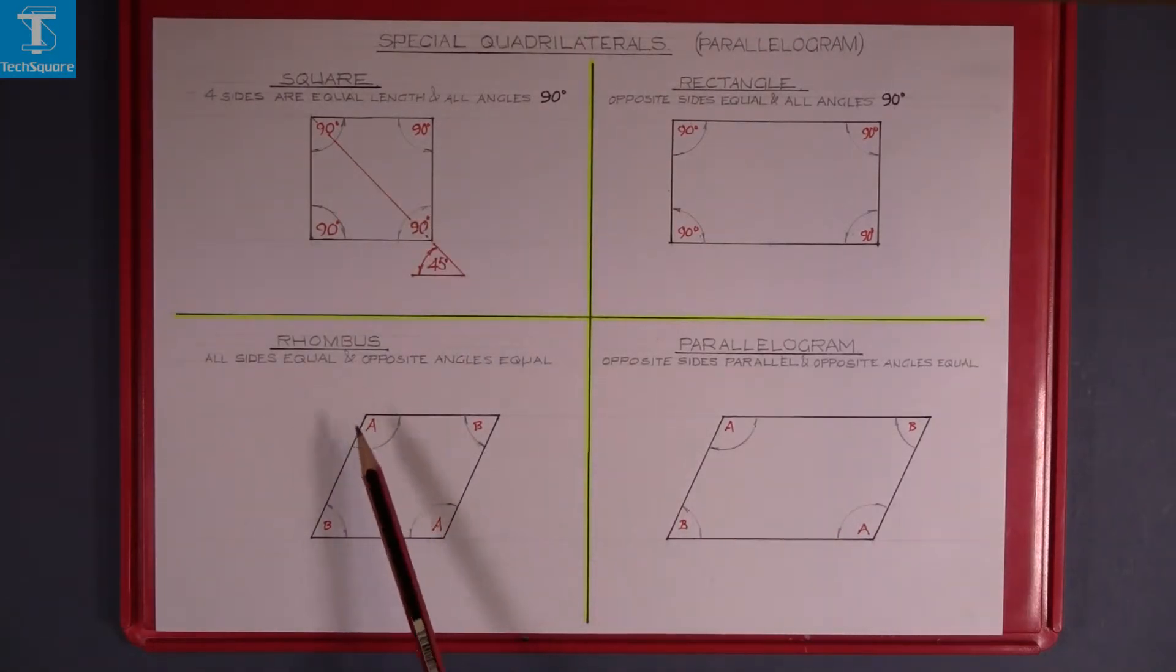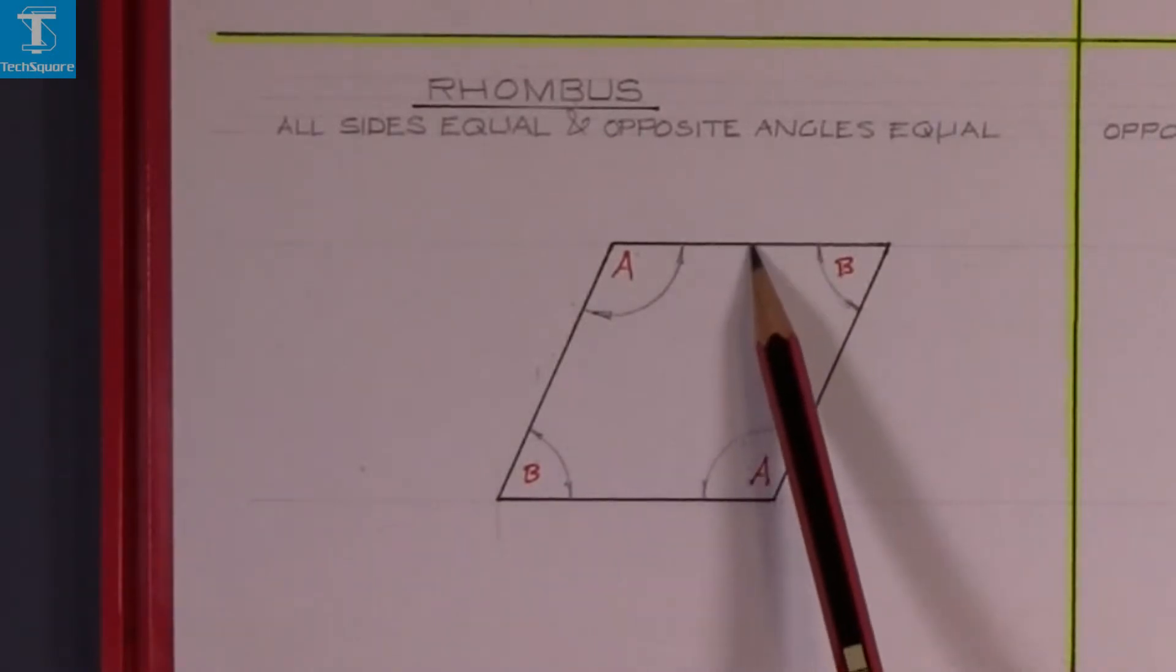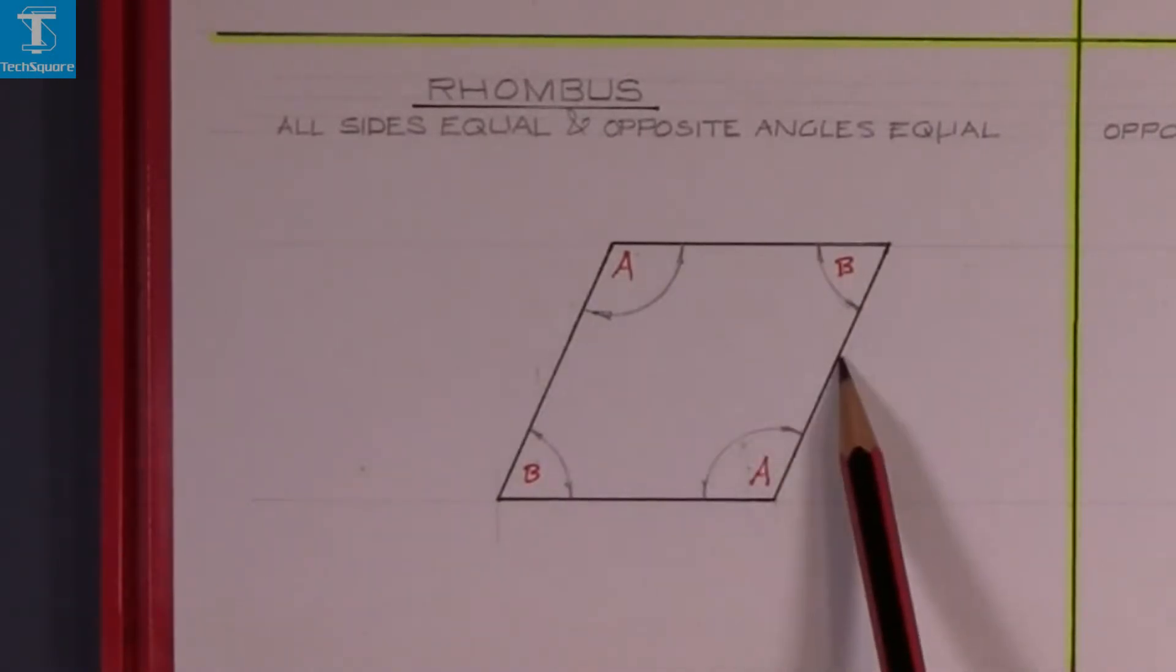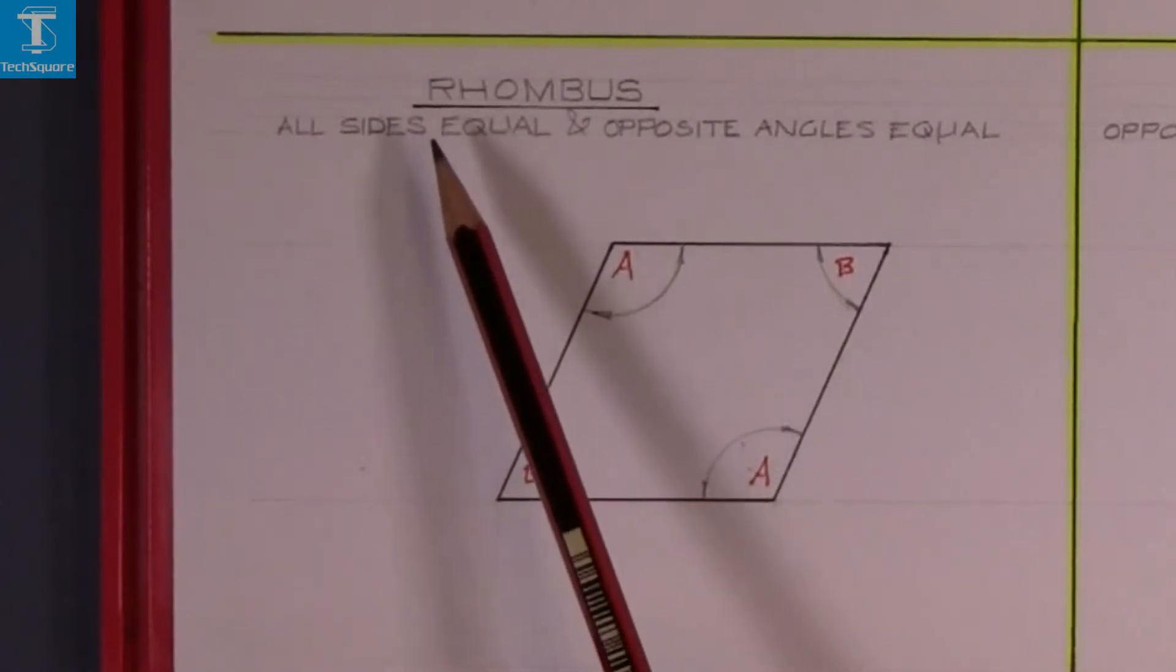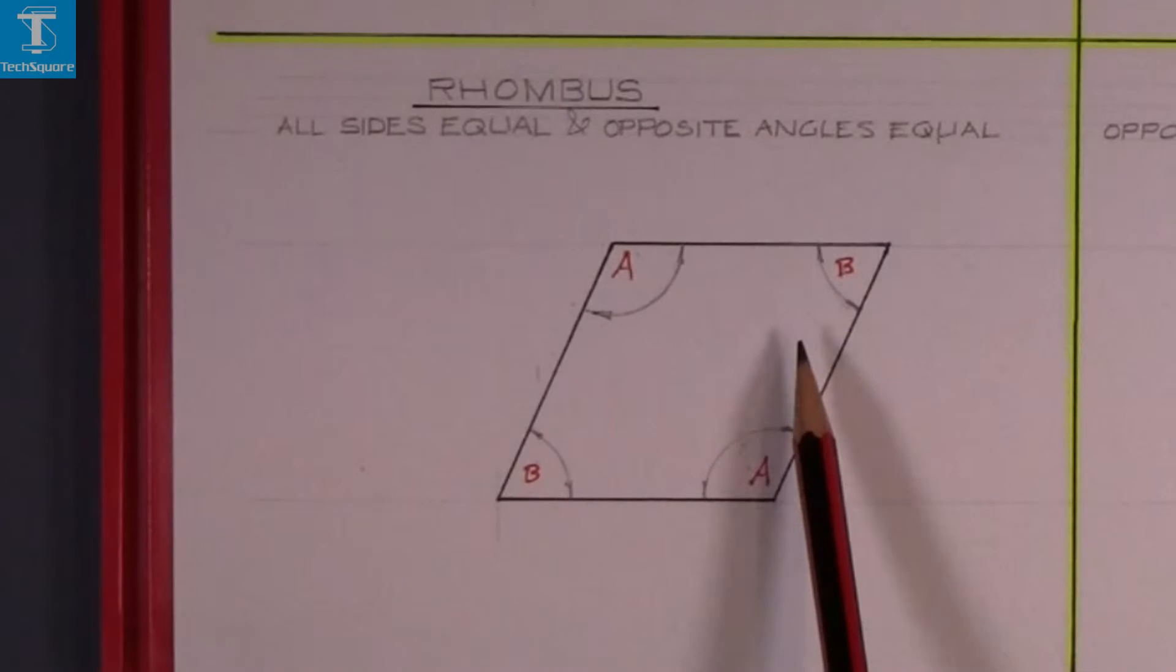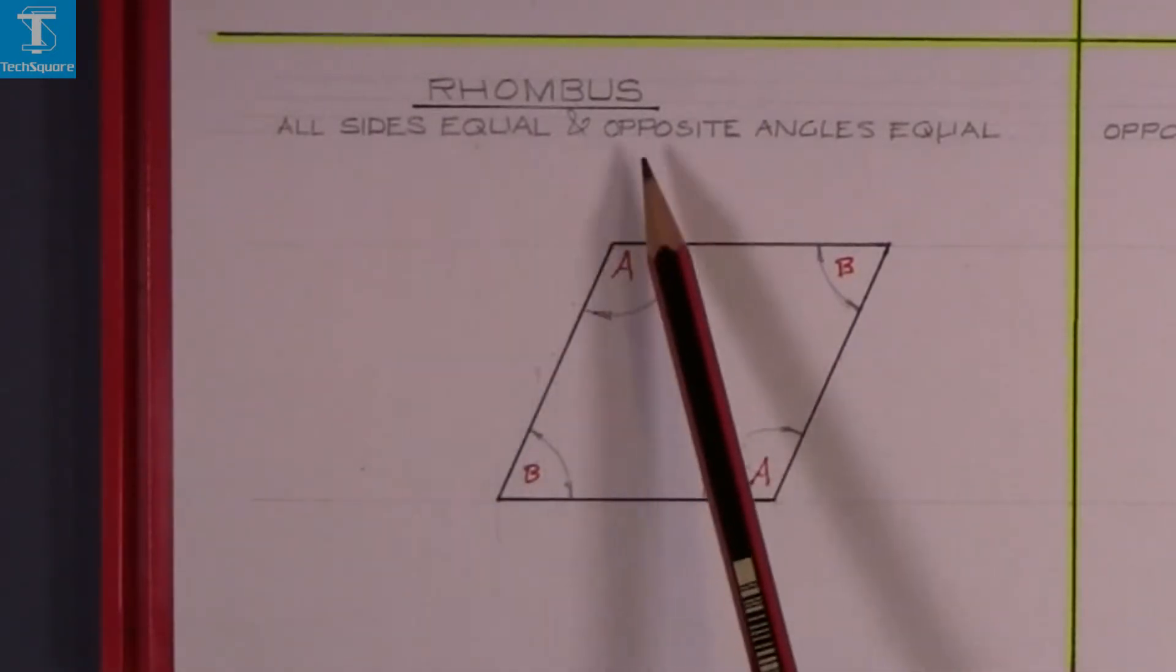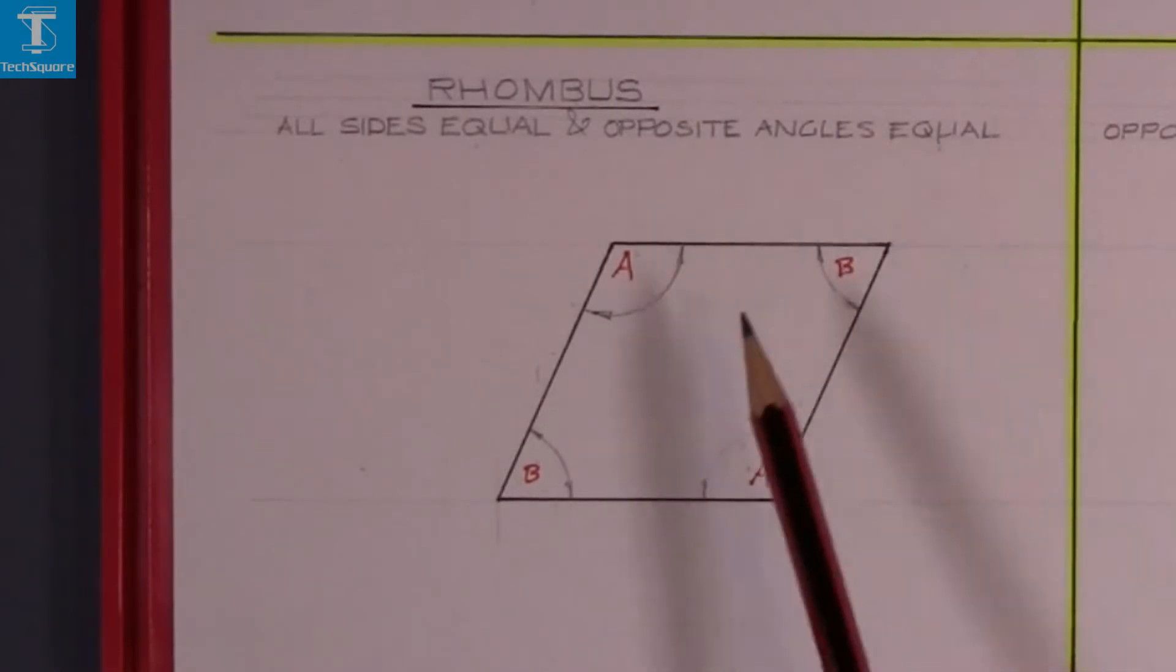Now we're on to a figure that has all the sides equal but it's pushed out of shape. It's called a rhombus. It's a square pushed out of shape. All the sides are equal and opposite angles are equal. So that angle there is equal to that angle.